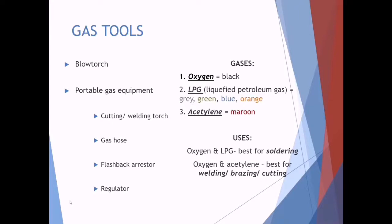Acetylene comes in a maroon cylinder. The uses for these gases are as follows: oxygen and LPG is best for soldering, and oxygen and acetylene is best for welding, brazing, as well as cutting.